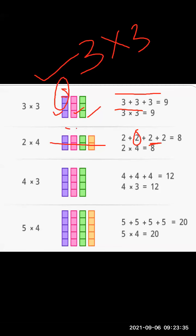If we use the addition method: 2 plus 2 plus 2 plus 2 equals 8. We are adding 2 four times. Instead of writing it 4 times, we simply write 4 into 2 or 2 into 4.